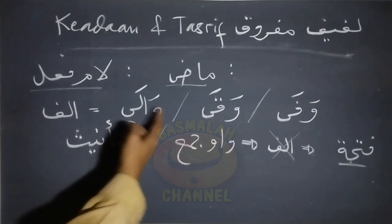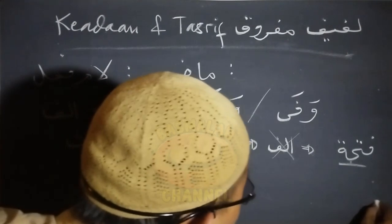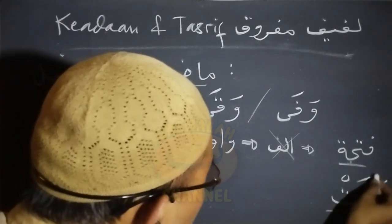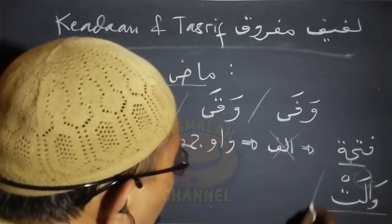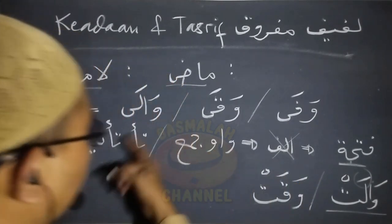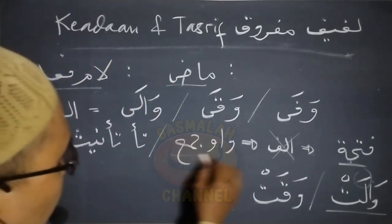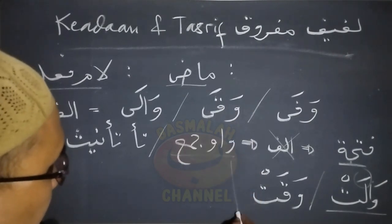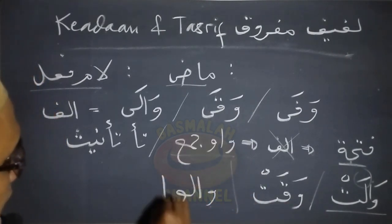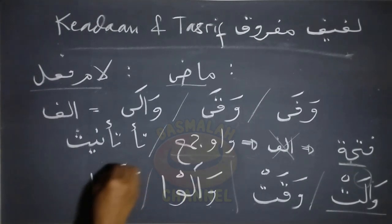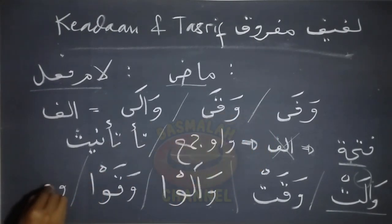Contohnya ketika bersambung dengan ta' ta'nis, katakalah lafad wala maka akan menjadi walat, di sini alifnya dibuang dan sebelum alif di sini ditetapkan harkatnya yaitu fathah. Atau lafad waqo maka akan menjadi waqat. Selanjutnya manakala bersambung dengan waw jamak prosesnya juga sama, membuang alif dan menetapkan harkat sebelum alif, akan menjadi walau. Selanjutnya waqo akan menjadi waqau. Begitu juga dengan lafad wafa akan menjadi wafau.